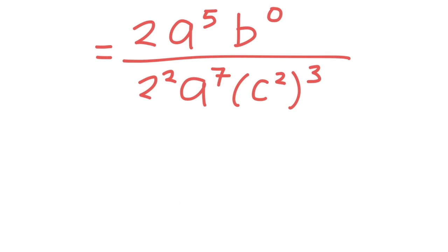After this, we have 2, which has an exponent of 1, and this is divided by 2 squared. We also have a to the power of 5 divided by a to the power of 7.